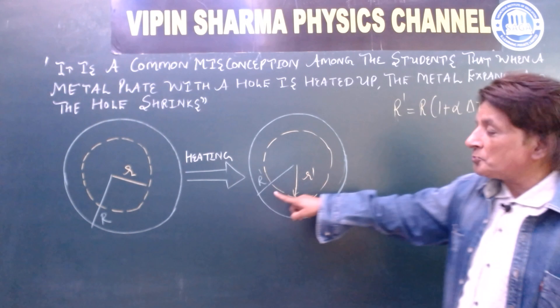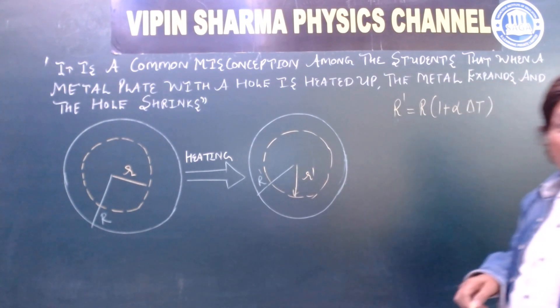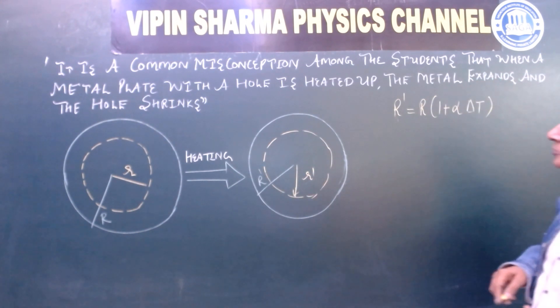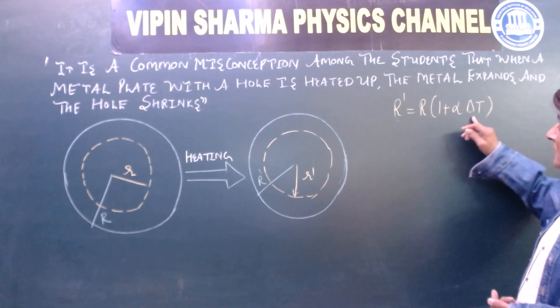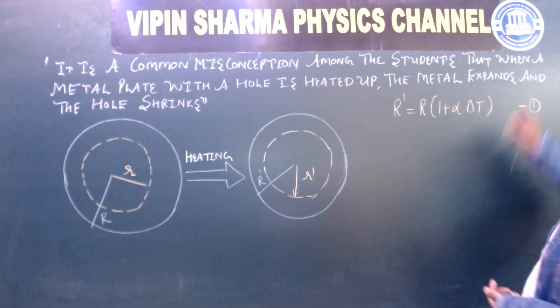R dash is the increase in the radius. So R is the original radius, 1 plus alpha delta t, we mark it 1.